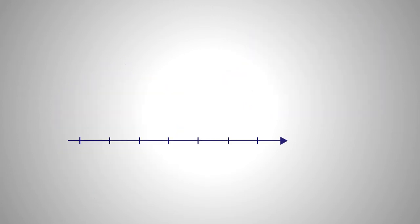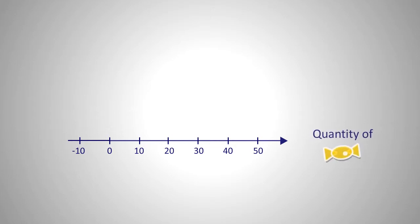Let's start from a number line. Let this be the quantity of sweets. Suppose I have 10 sweets — how can we express this on a number line? Just draw a dot here. 20 sweets — dot here. What about negative 10 sweets? A dot here.